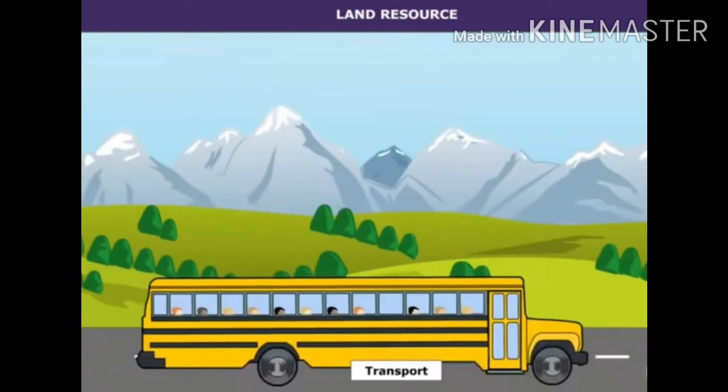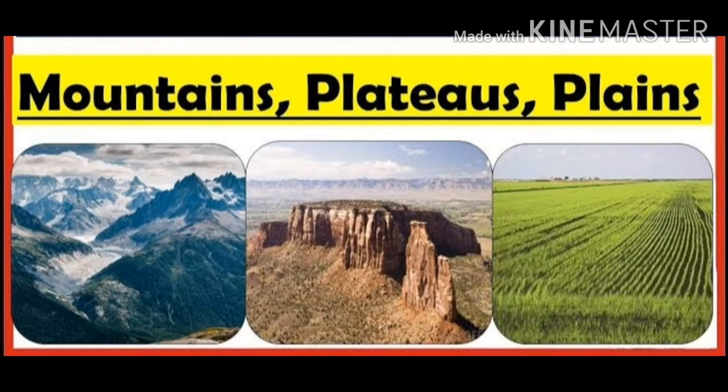Land provides food and water to all human organisms. Here we are going to learn three types of land forms: mountains, plateaus, and plains.